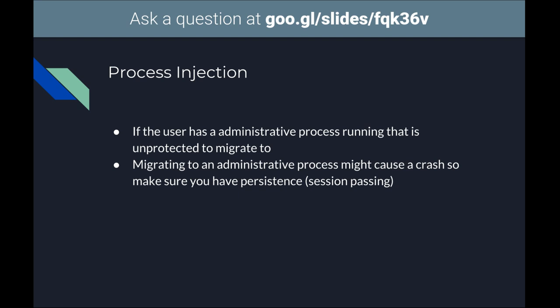A lot of times this can be volatile because the process can crash when you inject into it, or the process can reject the injection and close your session. So you always want to pass your session on to another box. There's a really cool tool inside of Metasploit called session injection — it allows you to take a whole other box and pass your session over to that box. So if your box goes down or your IP gets banned, you have another box with another IP address that can still connect without having to have them click your payload again. Session injecting or session passing is really useful in Metasploit. You can have multiple administrator accounts so that if your session does die you're not out of luck.